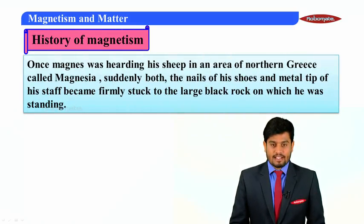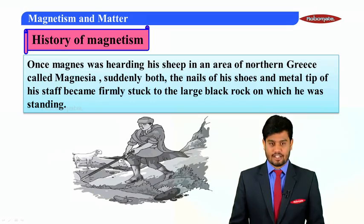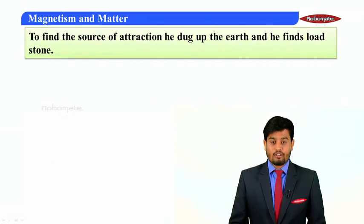Once Magnus was herding his ship in an area of northern Greece called Magnesia, suddenly both the nails of his shoes and the metal tip of his staff became firmly stuck to the large black rock on which he was standing. He was very curious to know the fact behind it. Therefore, to find the source of attraction, he dug up the earth and he finds lodestone.